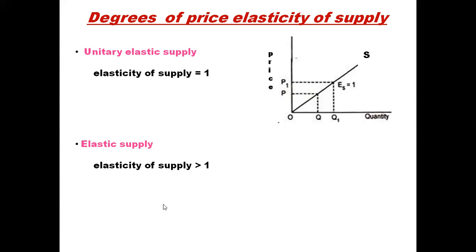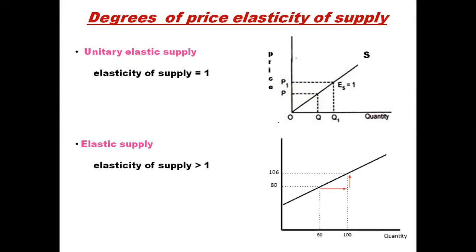Elastic supply has elasticity greater than one, meaning the percentage change in quantity supplied is greater than the percentage change in price. For example, quantity supplied increases from 60 to 100 (a change of 40) while price increases from 80 to 106 (a change of 26). Any supply curve that cuts the Y-axis has elastic supply — ensure it cuts the Y-axis when drawing in the exam.